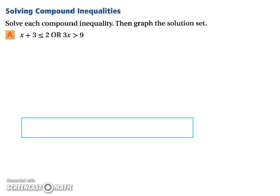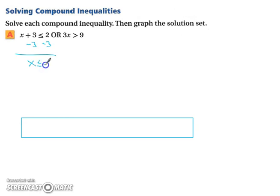Let's start by solving some compound inequalities. To solve, you solve the same way you would any inequality — only now you have two of them to look at. Starting with the left side, we subtract three from both sides, leaving us with x is less than or equal to negative one. Then for the right side, we divide both sides by three, leaving us with x is greater than three.